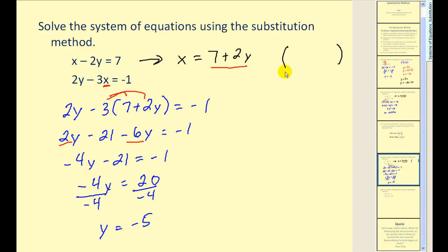Again, we don't want to rush through this. Remember, one solution consists of an x and a y value. So far we've only found the y value. So in order to find the x value, we need to replace y with negative 5 in one of these two equations. Here we can see that these two equations are equivalent. So to find x, we can just replace y with negative 5. So we have an x value of negative 3.